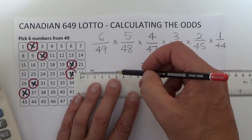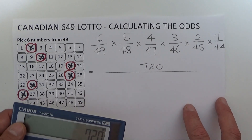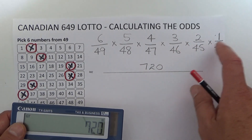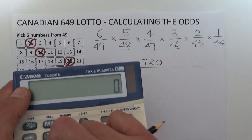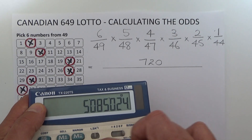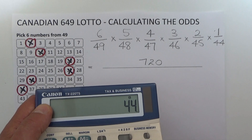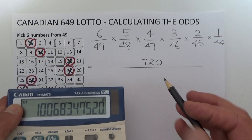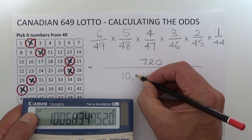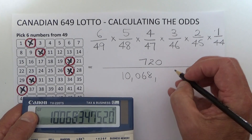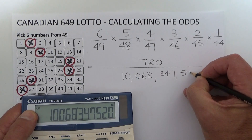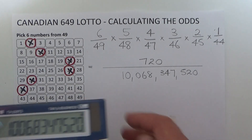Now we multiply out the bottom row: 49 × 48 × 47 × 46 × 45 × 44. That equals the astronomical number of 10 billion, 68 million, 347 thousand, 520.